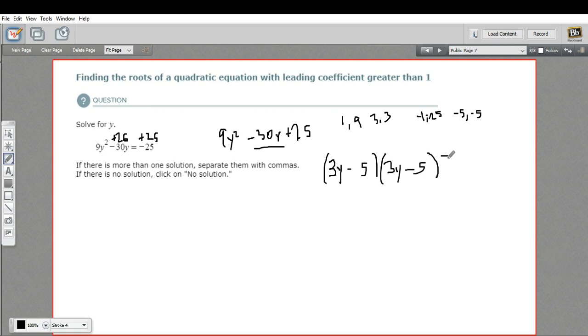So we've got 3y minus 5 equals 0. We would set both of these equal to 0, except they're exactly the same. So we really only have to set 1 equal to 0 and then solve this. So we'll add 5 and we get 3y equals 5 and then divide by 3 and we get y equals 5 thirds.